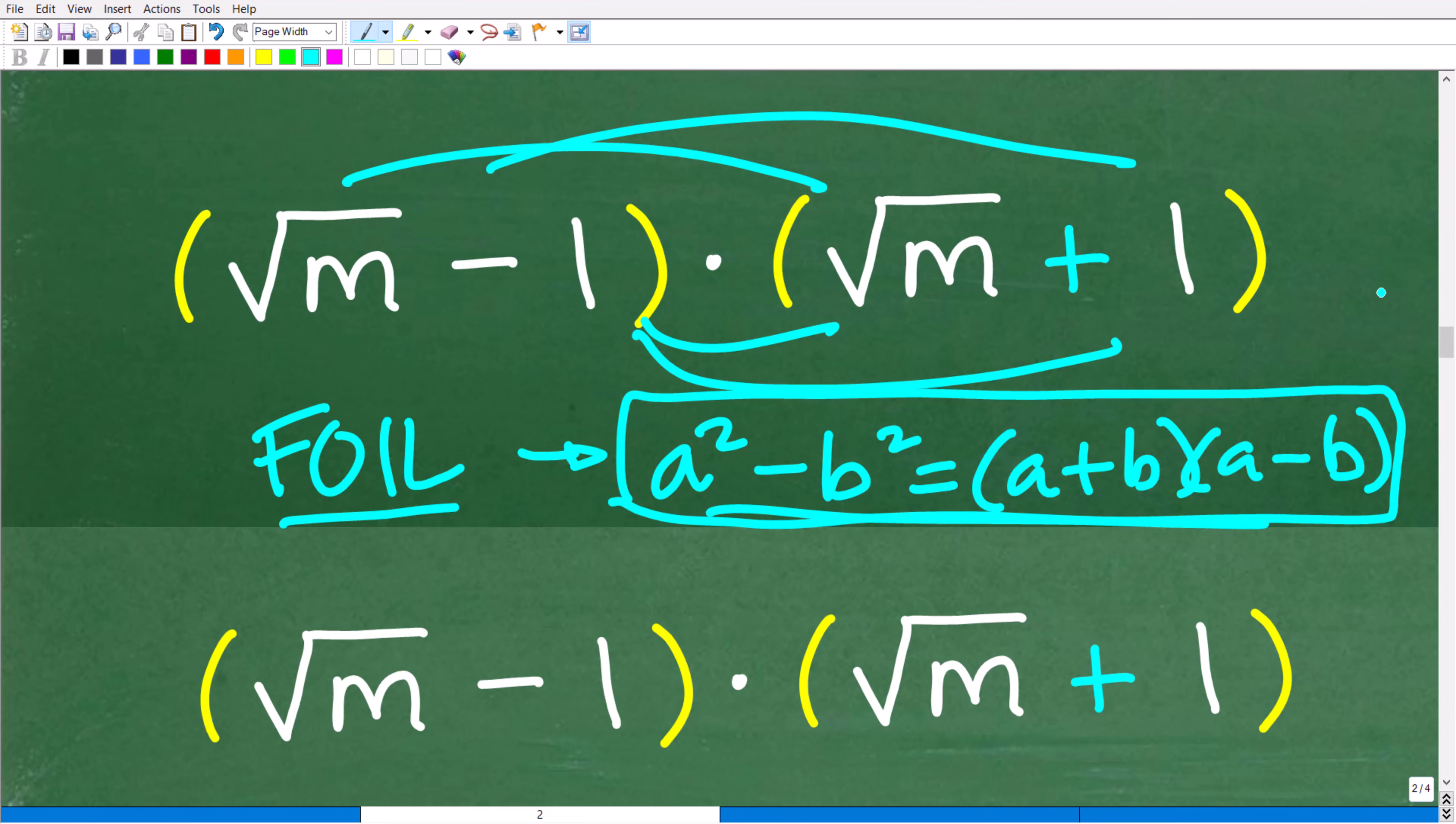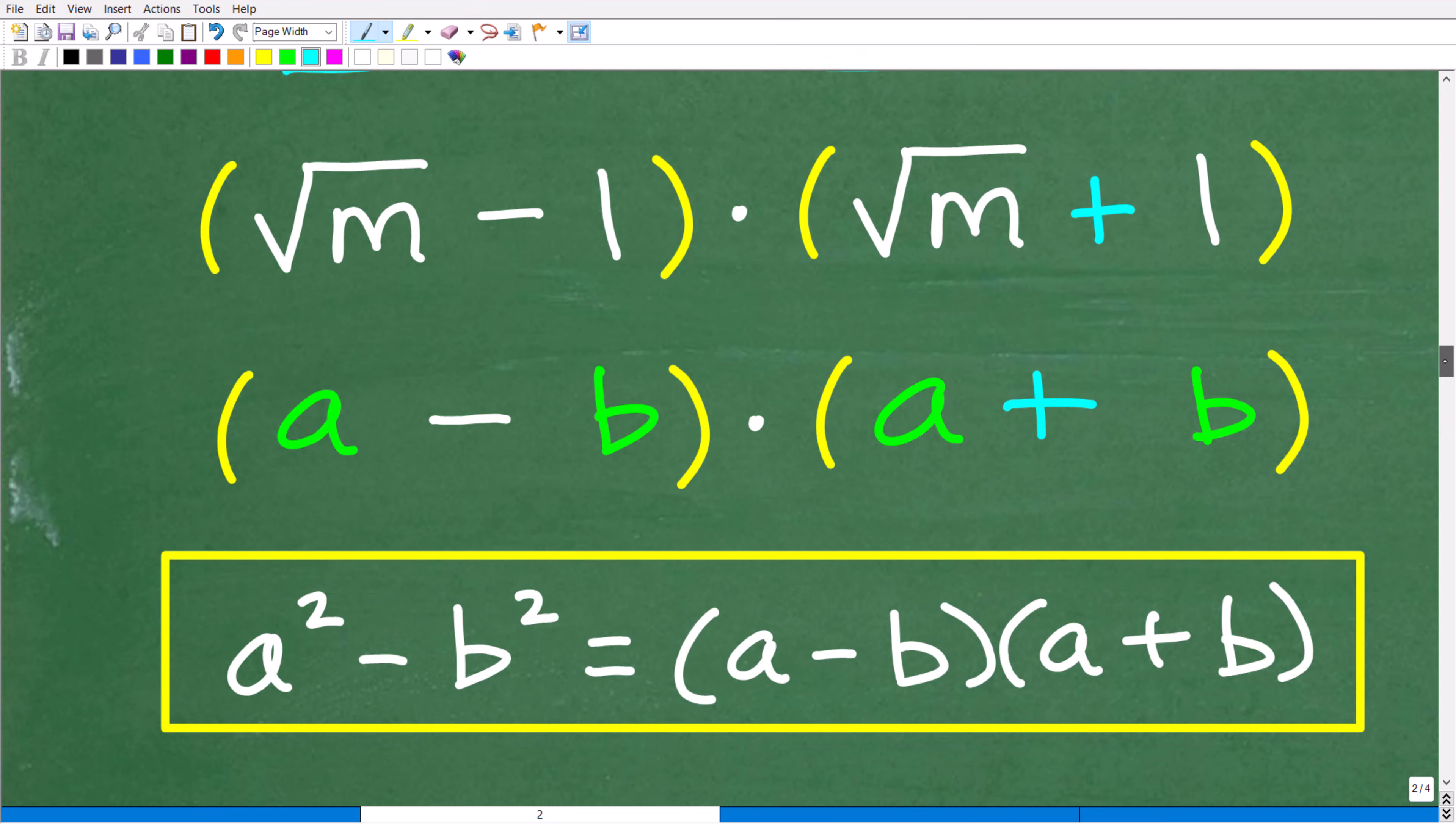But let me go ahead and show you how we can find the product of these two binomials using both the FOIL method and the difference of two squares. Let's go ahead and first talk about the difference of two squares. So if you notice here, if we look at this pattern, we have an a minus b times a plus b.